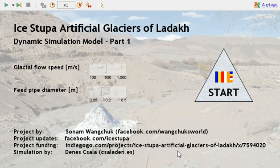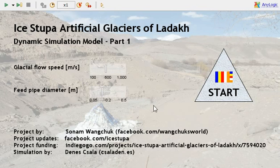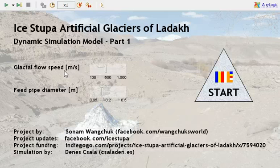You can follow the link in the description to open a working version of this model on RunTheModel.com. At this abstraction level, artificial glacier growth is controlled by two parameters: the glacial feed pipe diameter and the glacial flow speed, which is essentially proportional to the altitude difference between the feed pipe head at the real glacier and the location of the artificial glacier.